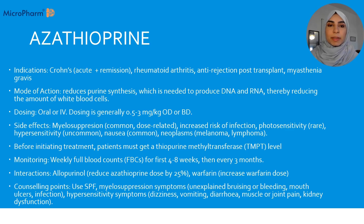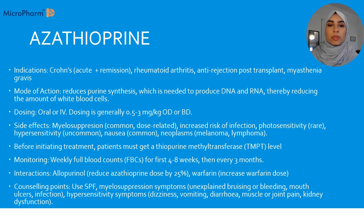Let's start with azathioprine, which is indicated for Crohn's — treating acute flare-ups and maintaining remission — rheumatoid arthritis, anti-rejection post-transplant, and myasthenia gravis, which is another autoimmune condition. The mode of action isn't entirely understood, but what we do know is it reduces purine synthesis. Purine is a compound we get from our diet needed to produce DNA and RNA, so by reducing synthesis we reduce the amount of white blood cells produced, which helps lower that overreactive immune response.